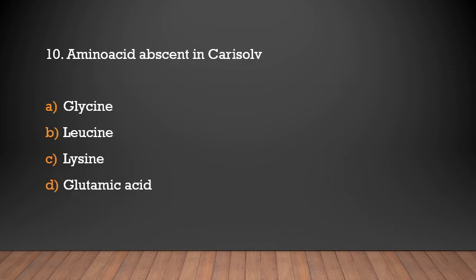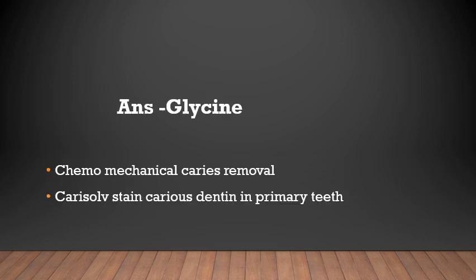Which amino acid is absent in Carisolv? Options: glycine, leucine, lysine, glutamic acid. Answer: Glycine. Carisolv is a chemo-mechanical caries removal technique that stains carious dentine in the primary tooth. Carisolv contains leucine, lysine, and glutamic acid.